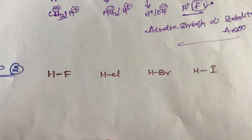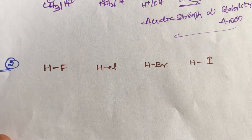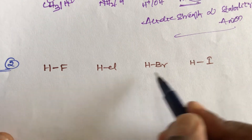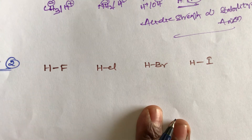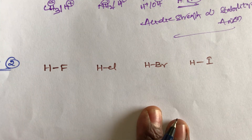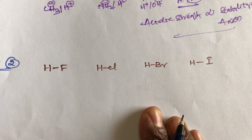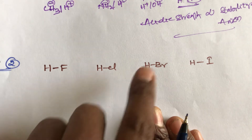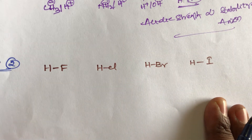Now take another example — Example 2. Given the following compounds: HF, HCl, HBr, and HI. All four belong to the same group (group 7). Generally, left to right acidic strength increases, but down the group acidic strength decreases.